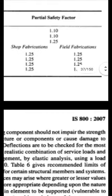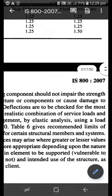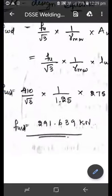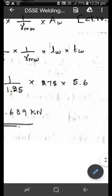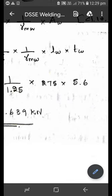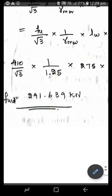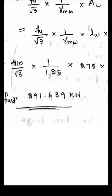So we have to use the value of 1.25 in this equation. Now I have substituted all the values in this expression: 410 / √3 × 1 / 1.25 × length of the weld is 275 × throat thickness is 5.6. Then worked out that value as, by using this calculator, I have get the value of 291.639 kilonewton.